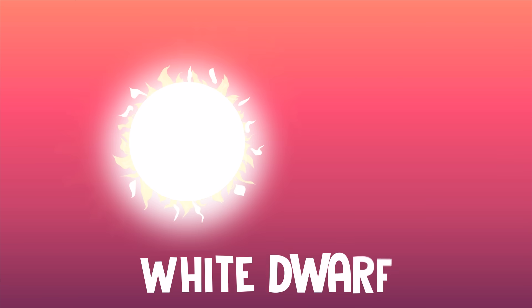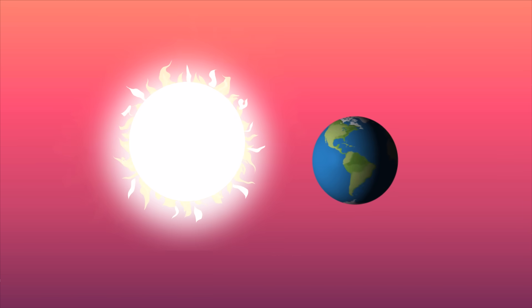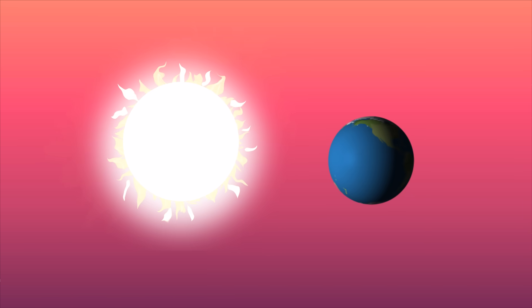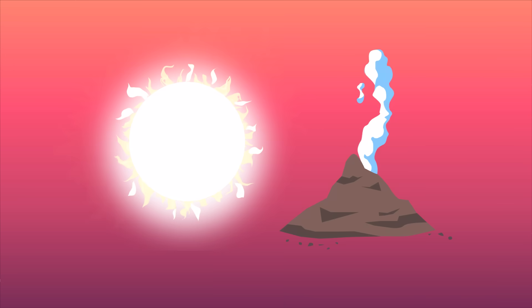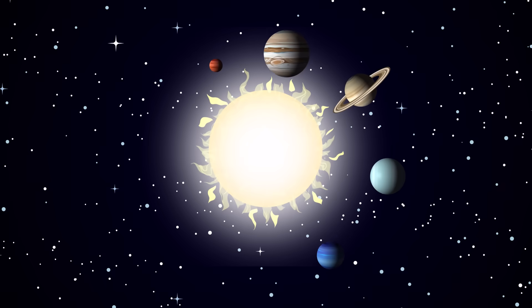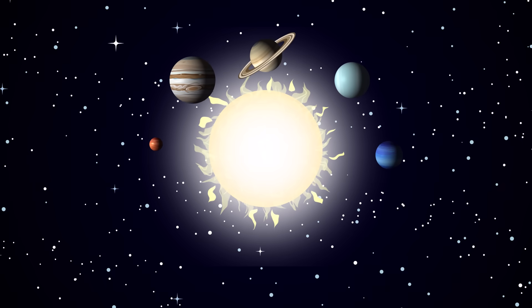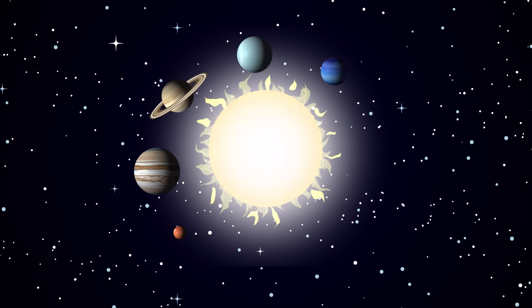Once our sun hits this stage, it'll only be slightly bigger than the Earth, but about 200,000 times more dense. Mercury, Venus, and Earth will all have been destroyed long ago when the sun was a red giant.